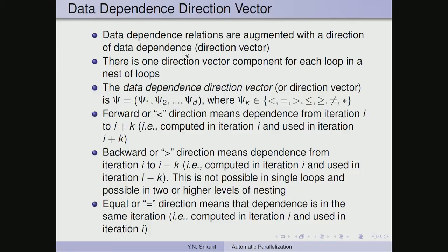The data dependence direction vector is additional information attached to the dependence itself. There is one direction vector component for each loop in a nest of loops. If there is a three-level nested loop then we have one for each of the three. The vector has depth d, and each component can be less than, equal to, or greater than. The others — less than or equal to, greater than or equal to, not equal to, and star — are derived from the principal components less than, equal to, and greater than.